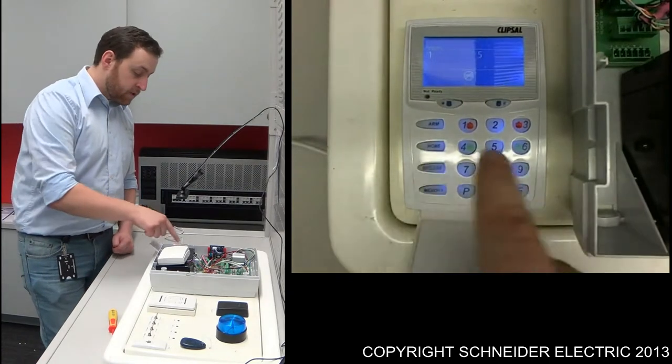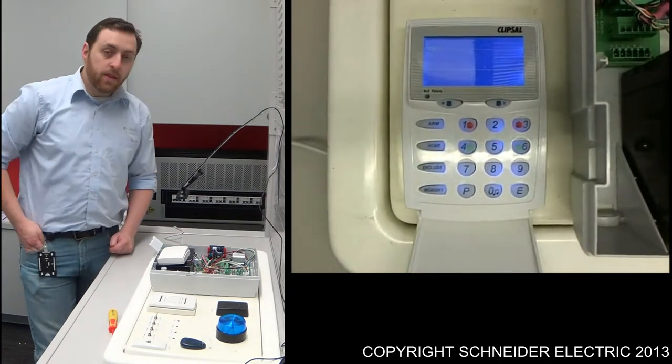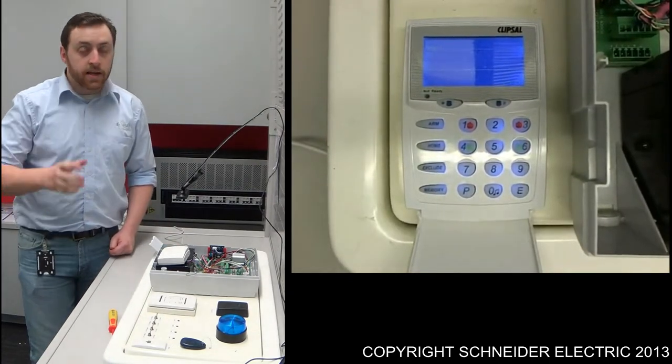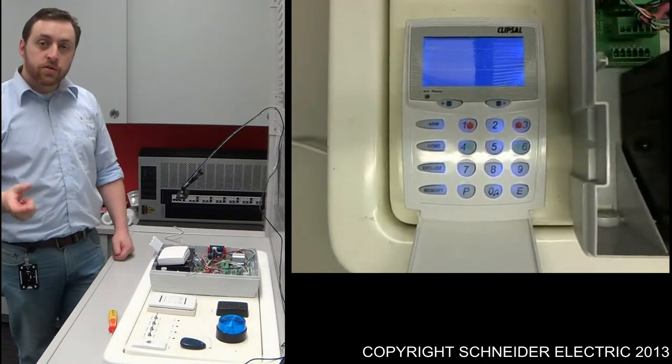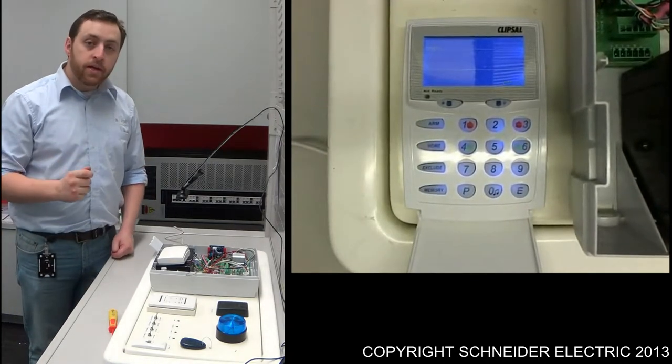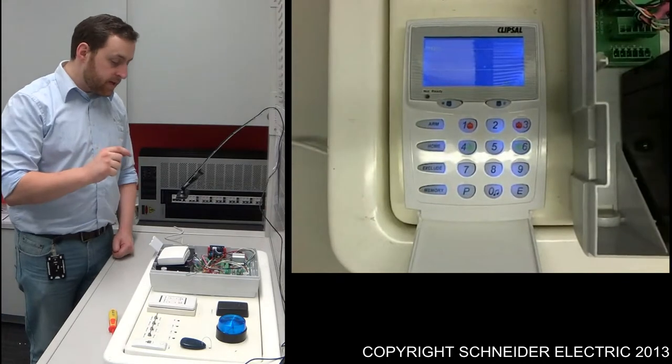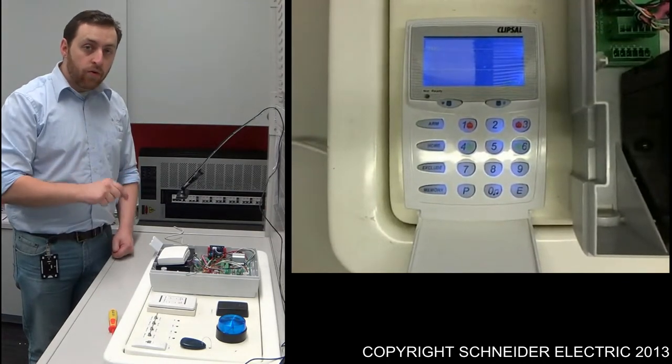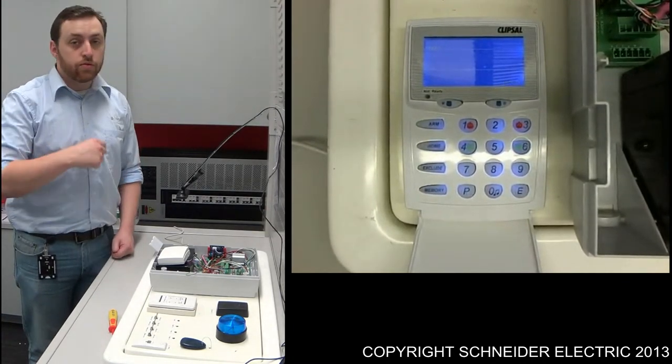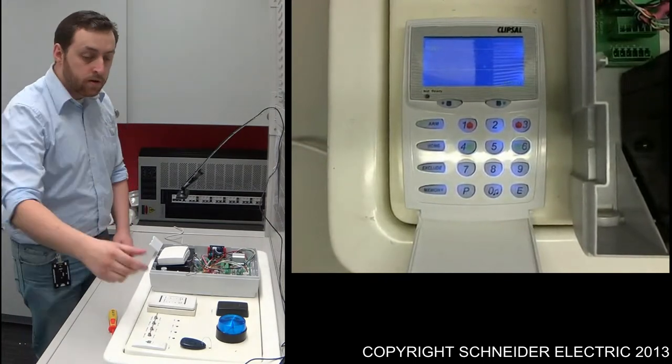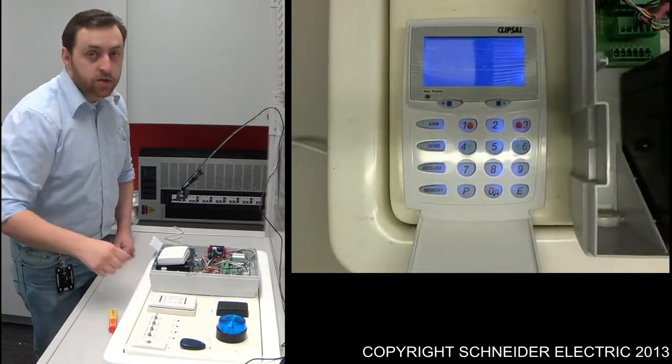From here, just press exclude E. That will exit the extra options for the user code. From here, what we need to do is get this system ready to receive a command from the actual remote. We need to pair these two up.